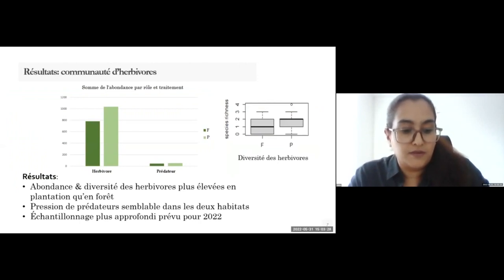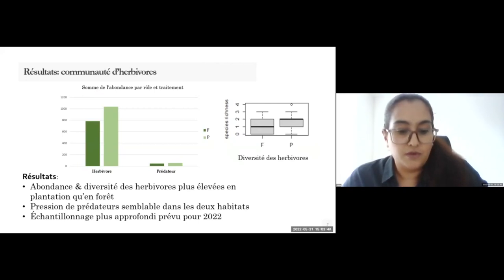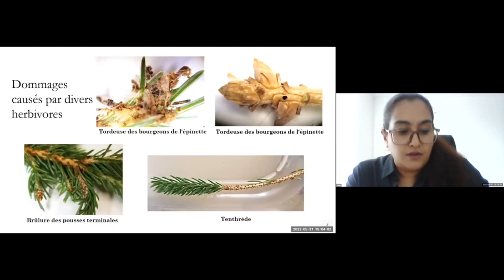For the first objective, our preliminary results showed that white spruce in plantations had higher abundance and diversity of herbivores, as shown in the graphs, compared to naturally regenerated forest. However, damage levels were overall low in both habitat types. We also observed a similar pattern for predator pressure in both treatments. We will continue sampling in summer 2022 for the same objectives.